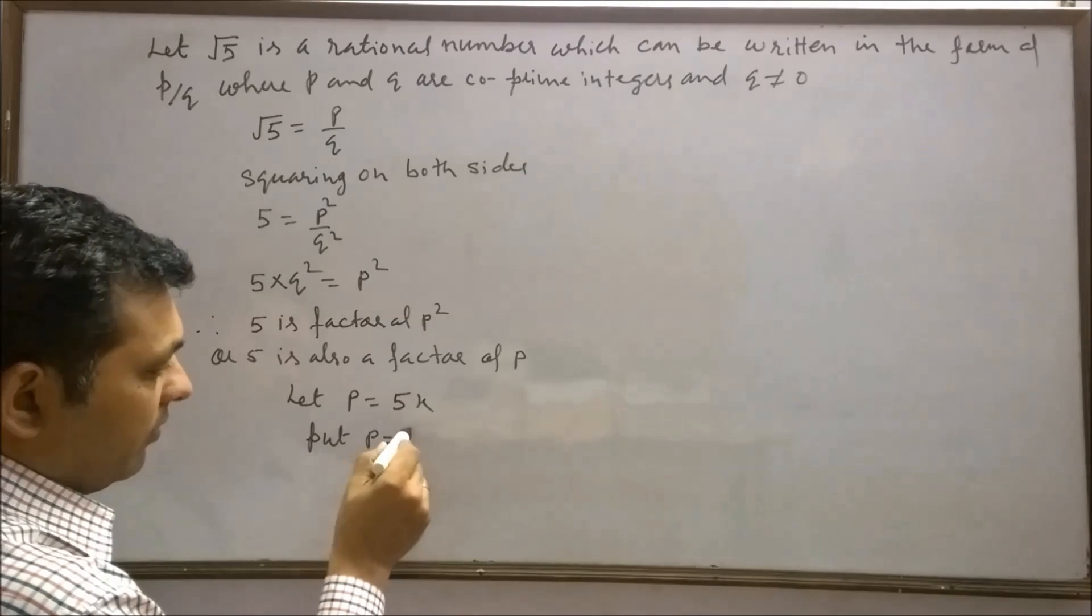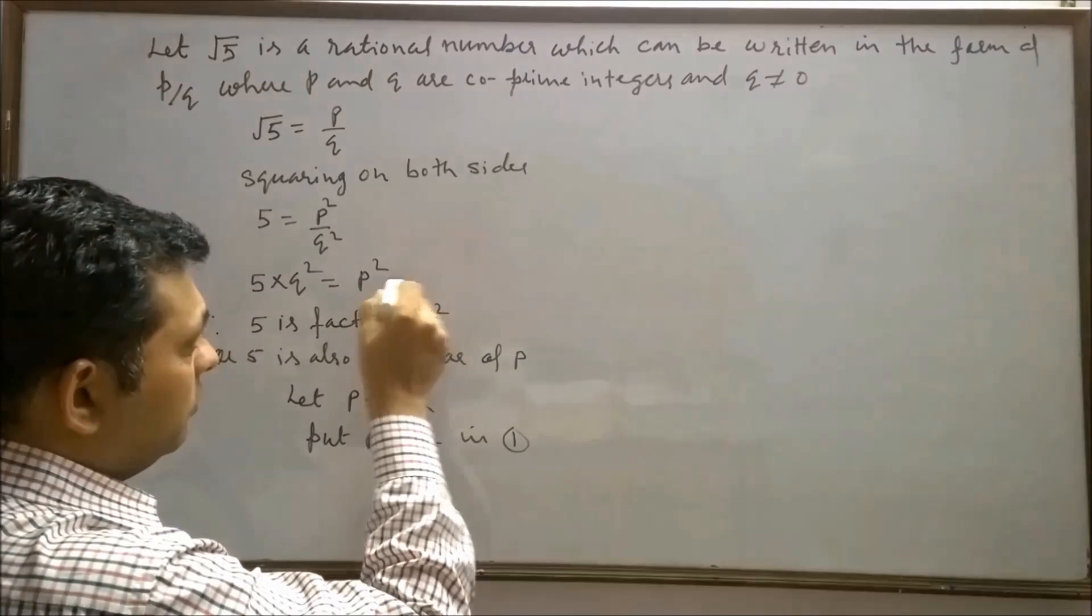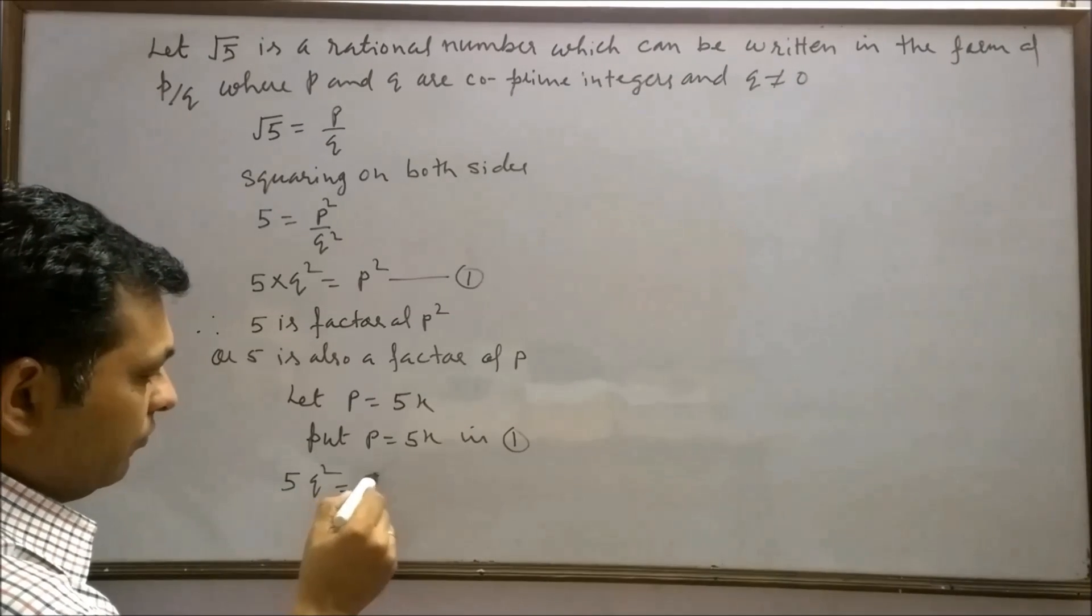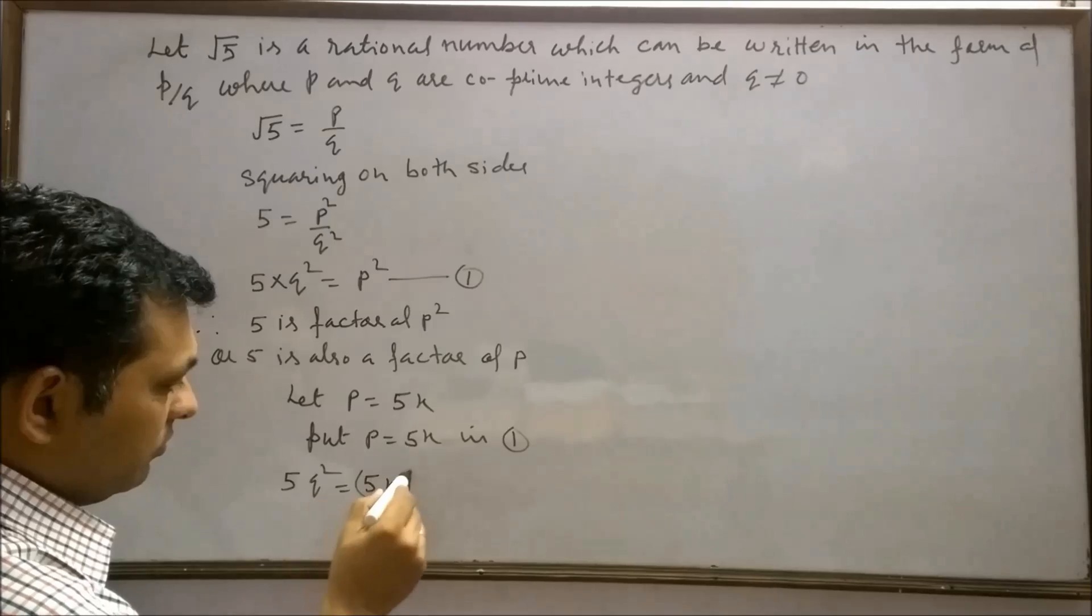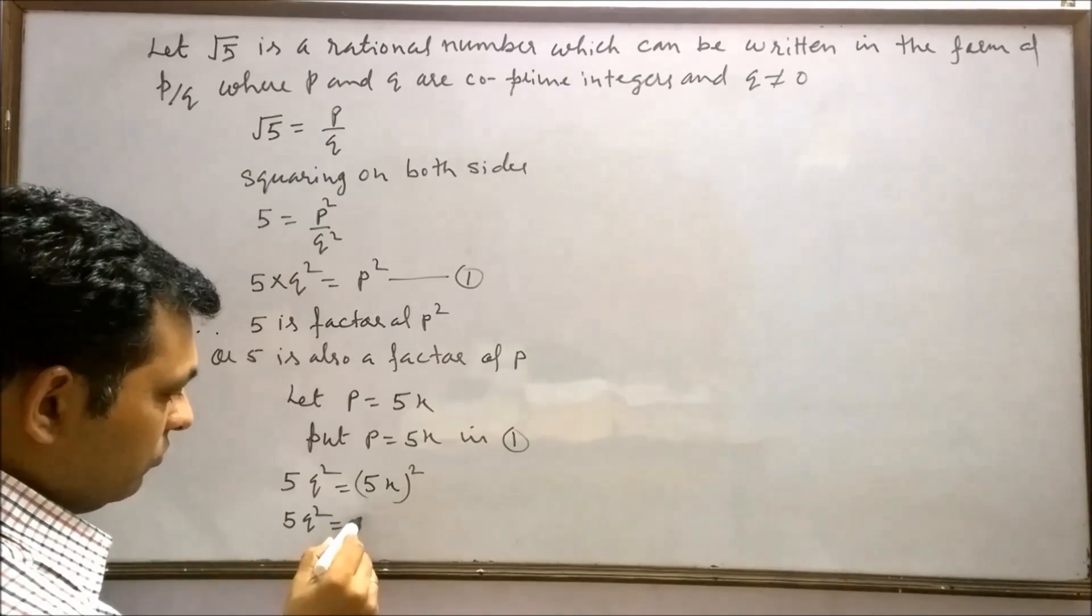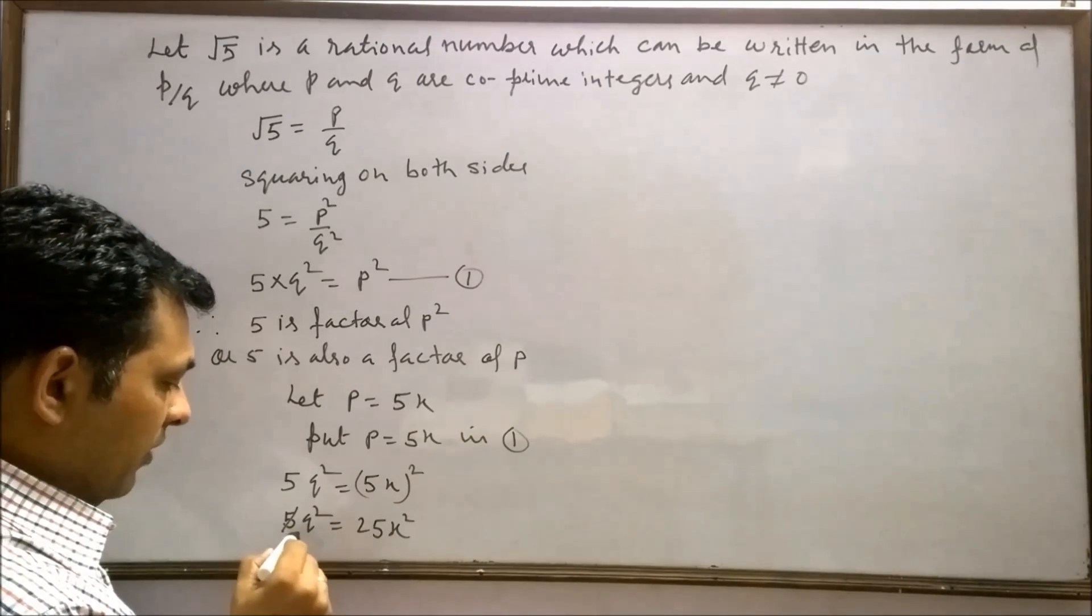Put p is equal to 5x in equation 1. 5q square will equal to 5x whole square, which is 5q square equals 25x square.